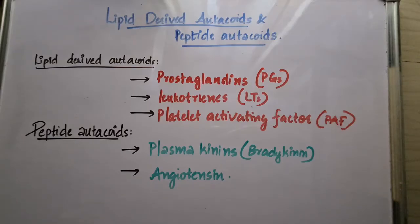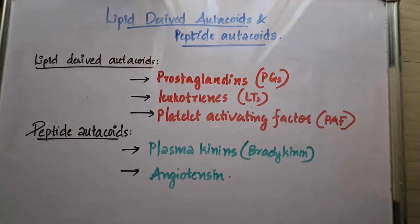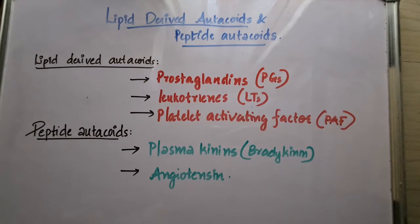Welcome back to Learning Pharmacology Pharmacy. Today's topic is a requested one: lipid-derived autacoids and peptide autacoids. In the last video we learned that autacoids are substances produced by a wide variety of cells in our body with intense biological activity, but they act locally — that is, at the site of their synthesis and release — which is why they are also called local hormones. Autacoids can be divided into amine autacoids, lipid-derived autacoids, and peptide autacoids.